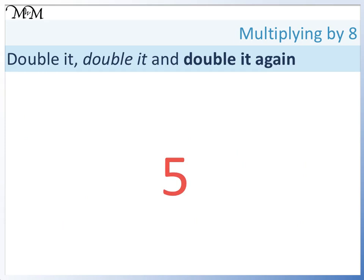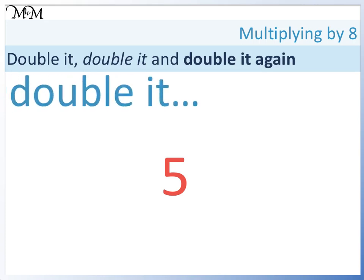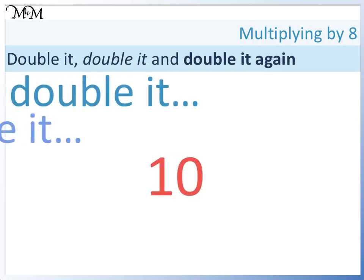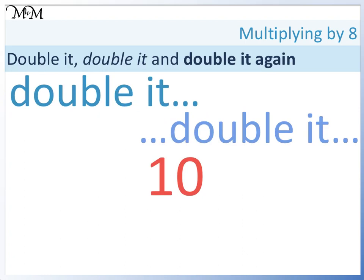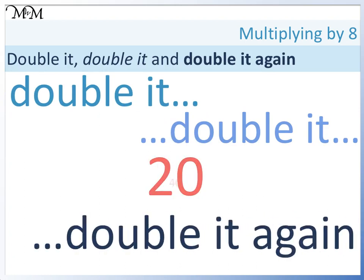So 5 times 8: double it, this gives us 10; double it, this gives us 20; double it again, this gives us 40. Quickly checking with our times tables, we know that 5 eights are 40.